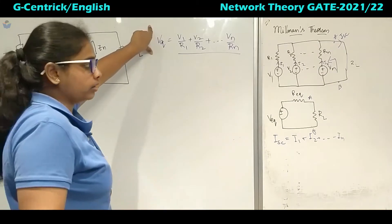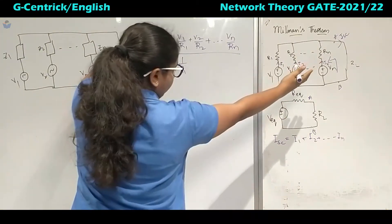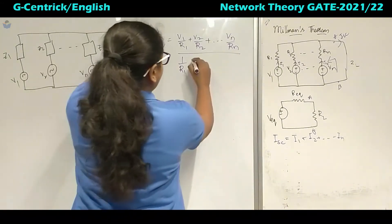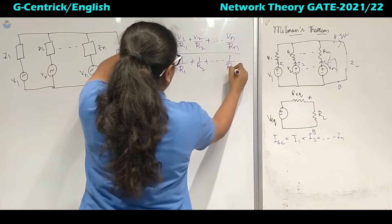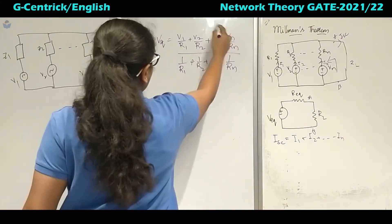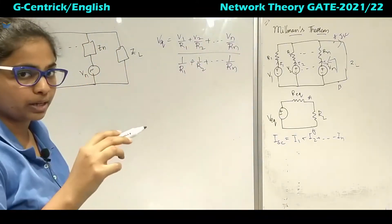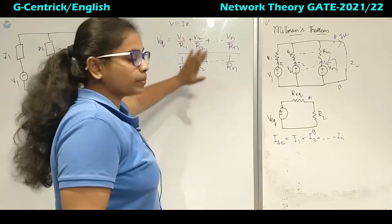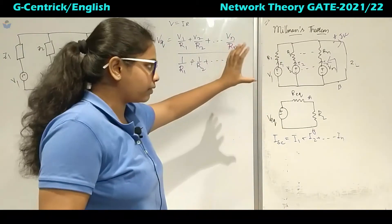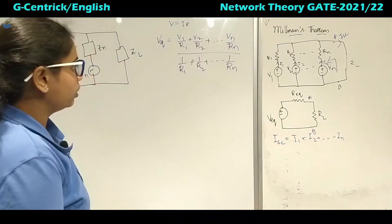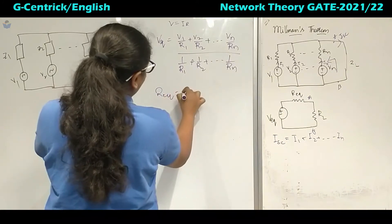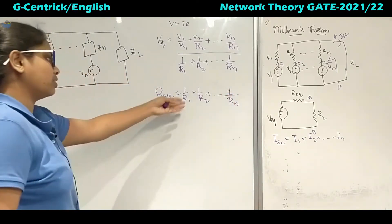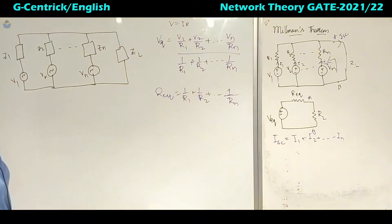To calculate V equivalent and R equivalent: V equivalent is ISC times R. The current can be written as V1/R1 + V2/R2 + ... + Vn/Rn. For R equivalent, you short all independent voltage sources. Since the resistors are in parallel, 1/R_eq = 1/R1 + 1/R2 + ... + 1/Rn, which is also G1 + G2 + ... + Gn in terms of conductance.